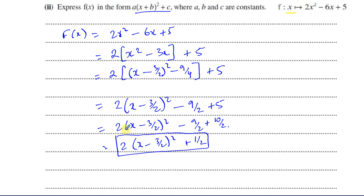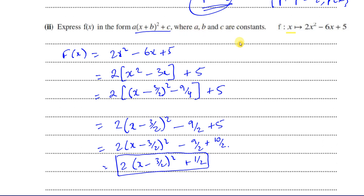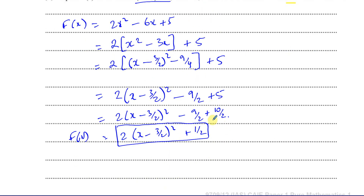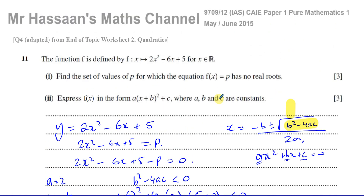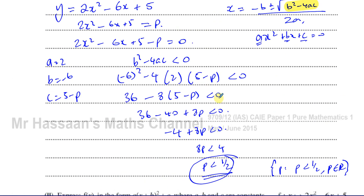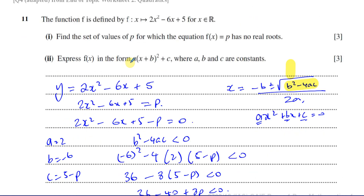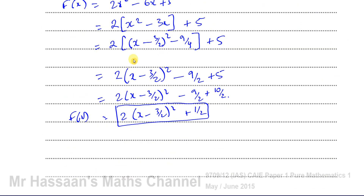We've expressed f(x) in the form a(x + b)² + c where a, b, and c are constants — we don't need to explicitly state their values since the question just says express it in this form. This is adapted from question 11 from the May-June 2015 paper. If I cover the functions topic later, I'll answer it in full as asked in the paper.